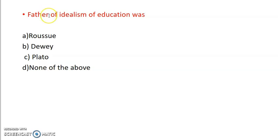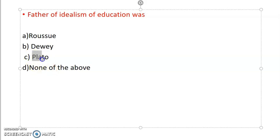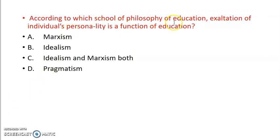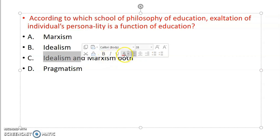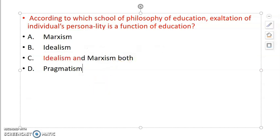Then father of idealism in education: Rousseau, Dewey, Plato, or none of the above? So answer is Plato. Plato was the father of idealism in education. Then next is, according to which school of philosophy of education, exaltation of individual personality is a function of education? Answer is option C, that is idealism and realism both believed this.